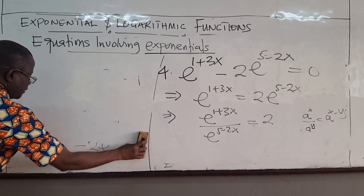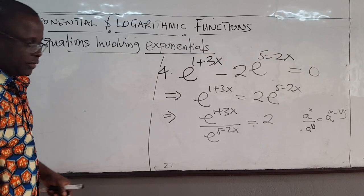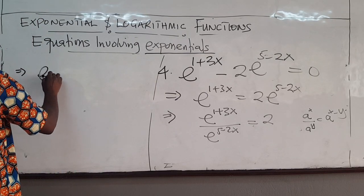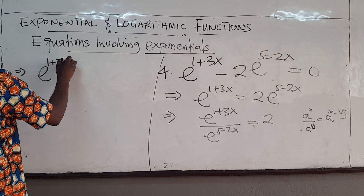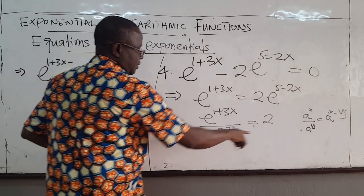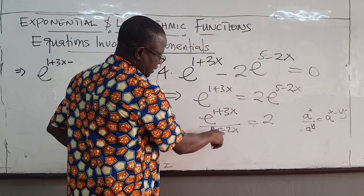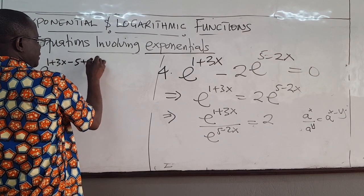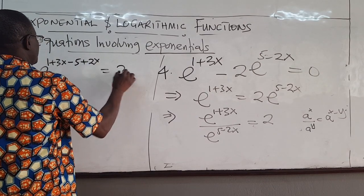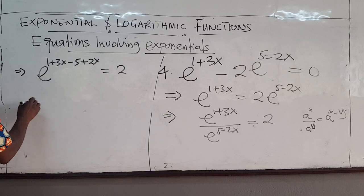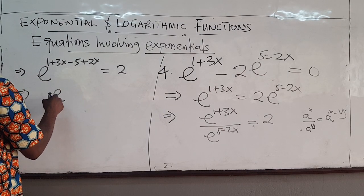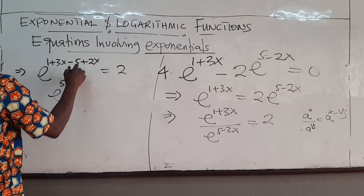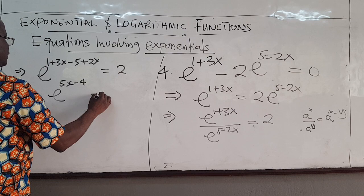So we get all of this. So we're going to have e^(1+3x) minus, so it says minus. So minus 5 minus minus, so plus 2x. So minus 5 plus 2x equals 2. This implies e^(5x). So this and this combine to give me 5x, this and this is minus 4, and this equals 2.